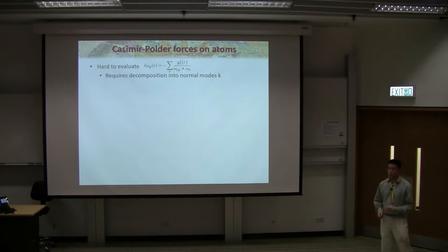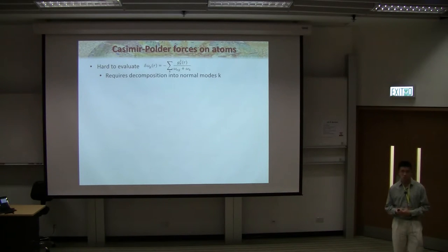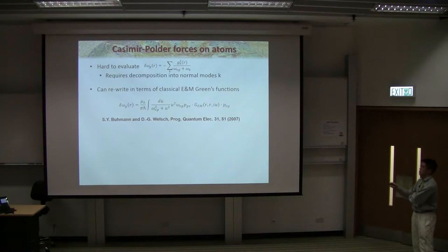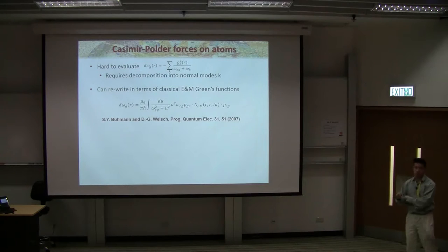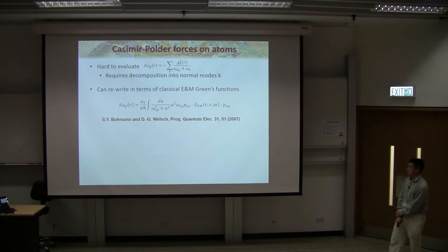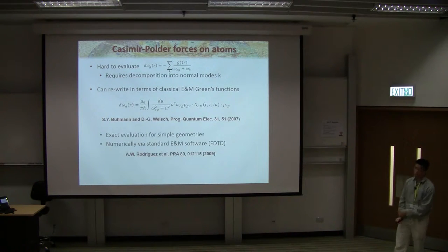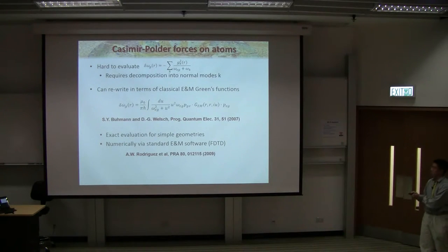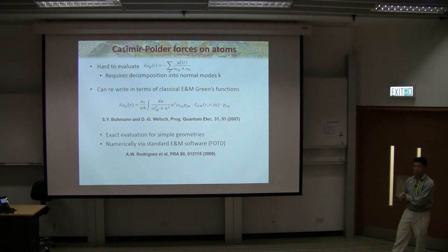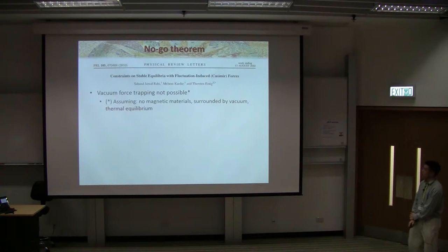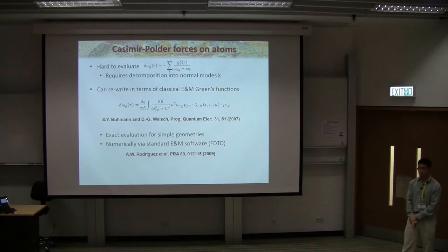In practice, it's not convenient to evaluate this as a sum over normal modes k. A number of people have shown you can rewrite it more conveniently in terms of the electromagnetic Green's function. The ground state energy shift can be written in terms of the Green's function times atomic properties — the resonance frequency and the dipole matrix element. This is the Casimir-Polder potential for atoms in the ground state. For simple geometries you can evaluate the Green's function analytically; for more complicated devices like photonic crystals, standard electromagnetic software such as finite-difference time-domain can be used to evaluate Casimir potentials.